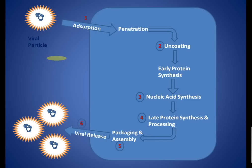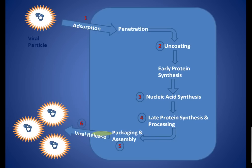These are the stages or checkpoints the viral particle goes through after entering the cell and finally releasing to infect new host cells. The red labels mark the checkpoints where we can hit them with our drugs. We can hit adsorption, prevent uncoating, block nucleic acid synthesis, prevent late protein processing, prevent packaging and assembly, and finally prevent release.